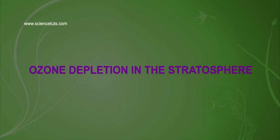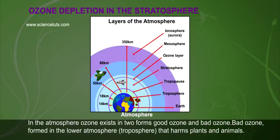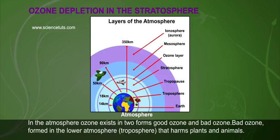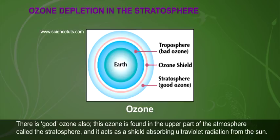Ozone depletion in the stratosphere: in the atmosphere, ozone exists in two forms — good ozone and bad ozone. Bad ozone is formed in the lower atmosphere (troposphere) and harms plants and animals. Good ozone is found in the upper part of the atmosphere called the stratosphere, where it acts as a shield absorbing ultraviolet radiation from the Sun.